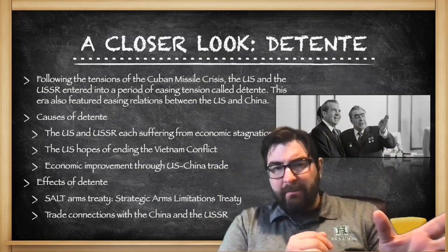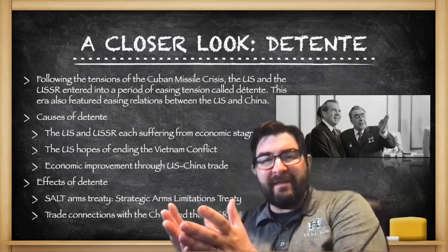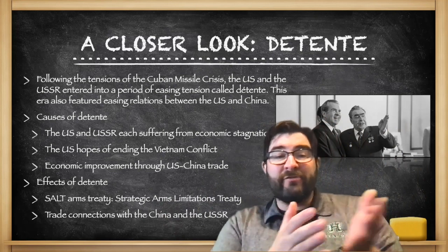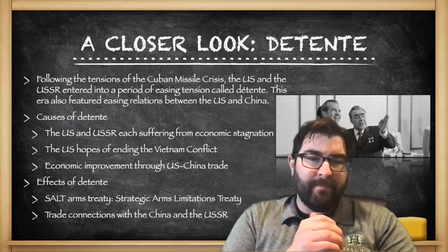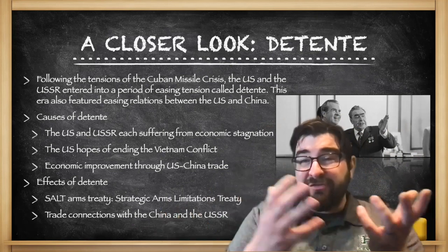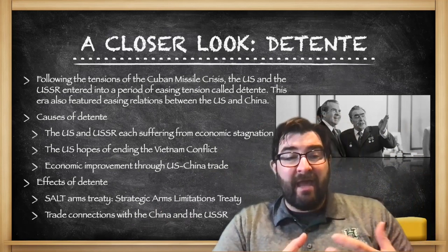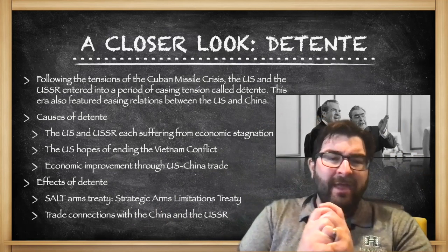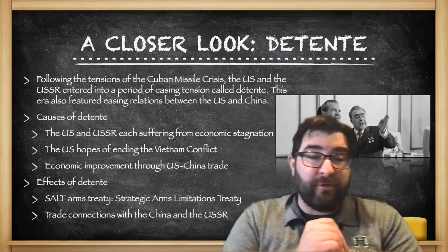Following the tensions of the Cuban Missile Crisis back in the early 1960s, the U.S. and the Soviet Union will enter into a period of easing tensions called detente. This era also featured easing relations between the U.S. and China and between Eastern Europe and Western Europe. The causes of this detente: the U.S. and the Soviet Union are each suffering from some economic stagnation, especially as we get into the 1970s. The United States has hopes of ending the Vietnam conflict that they'd been into for so long. Economic improvement would come through maybe U.S. and China trade relations.